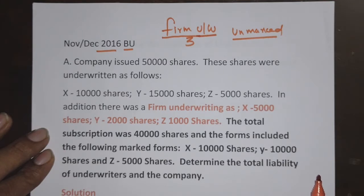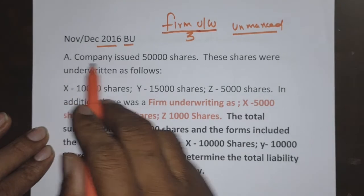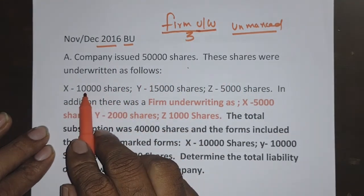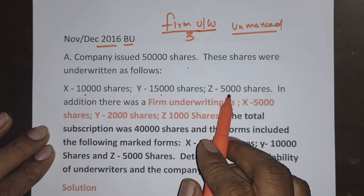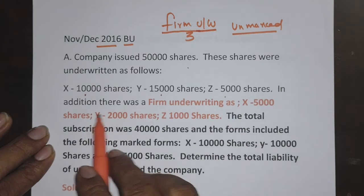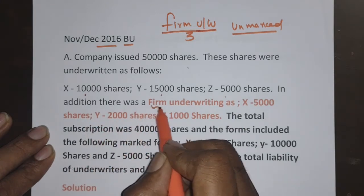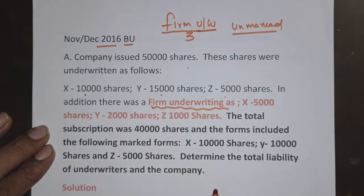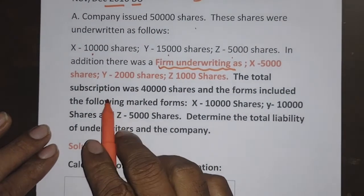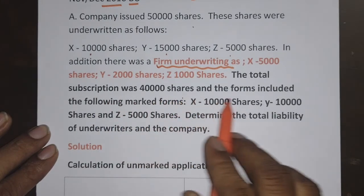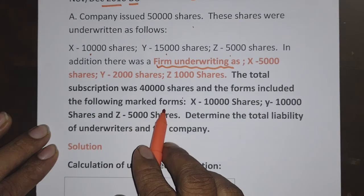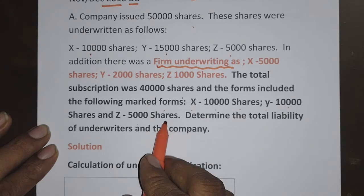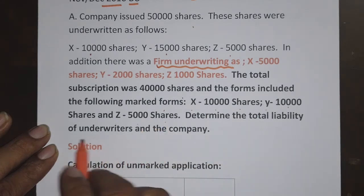A company issued 50,000 shares. These shares were underwritten as follows: X — 10,000 shares, Y — 15,000 shares, Z — 5,000 shares. In addition, there was firm underwriting: X — 5,000 shares, Y — 2,000 shares, Z — 1,000 shares. The total subscription was 40,000 shares, and the forms included the following marked forms: X — 10,000 shares, Y — 10,000 shares, Z — 5,000 shares.